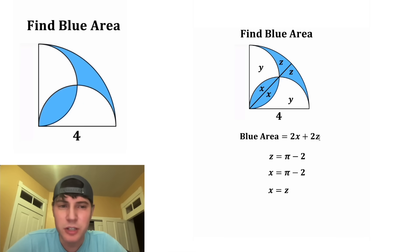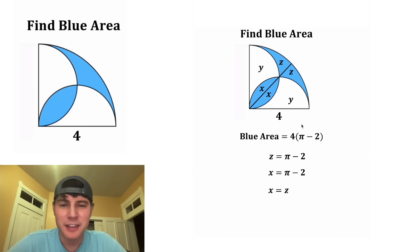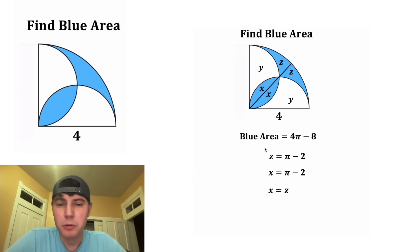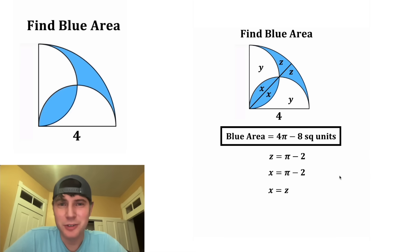Let's substitute in the place of z and x. So now we have 2x plus 2x, which is equal to 4x. In the place of x, let's plug in pi minus 2. And then this 4 can distribute to both of those to give us 4 pi minus 8. So we now know that the blue area is equal to 4 pi minus 8 square units. That's the answer to our question, so let's put a box around it. How exciting!